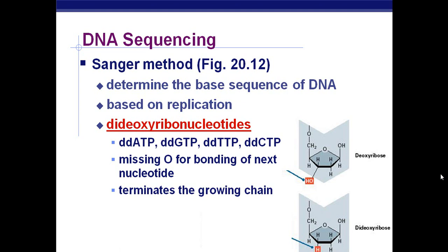Look at this term carefully: dideoxyribonucleotides. If you look at the abbreviations, you're going to see an extra 'd' there. What's going on is we are missing an oxygen from this hydroxyl group. This is where the next nucleotide would have bound, but since there is a missing oxygen, that would actually terminate the growing chain.